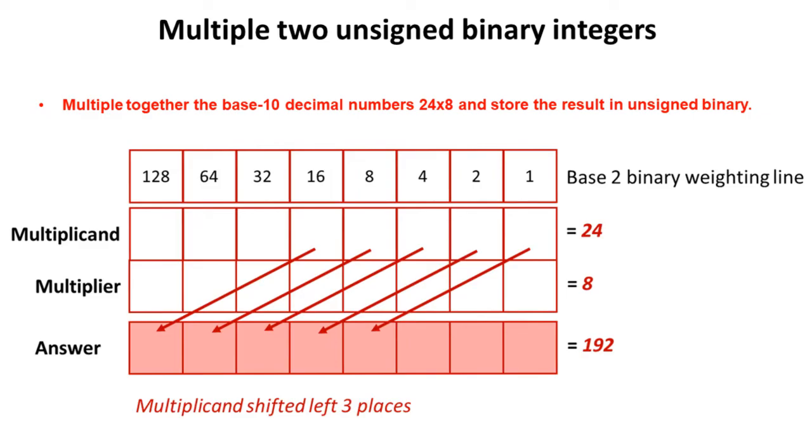So here I'm going to multiply together the base 10 decimal numbers 24 and 8 and store the result as an unsigned binary. First of all, I take the multiplicand, so that's the number I'm wanting to times, 24, and I write 24 out here. So that's 0, 0, 0, 1, 1, 0, 0, 0. And then obviously I've got the multiplier. The multiplier is 8, which is 0, 0, 0, 0, 1, 0, 0, 0.